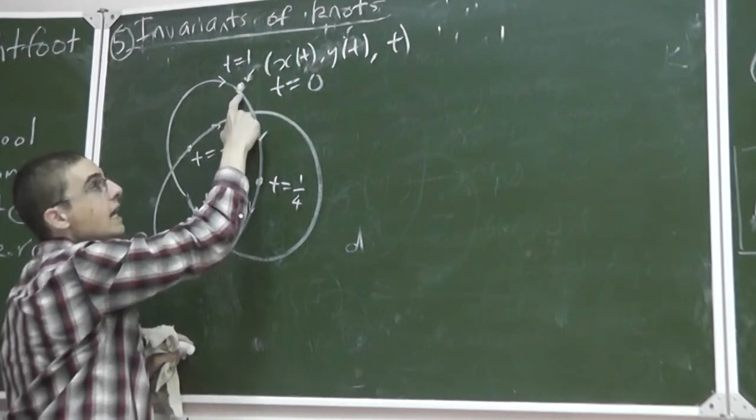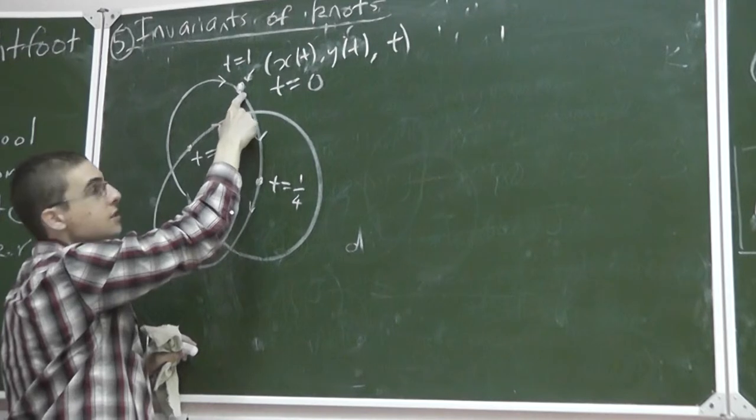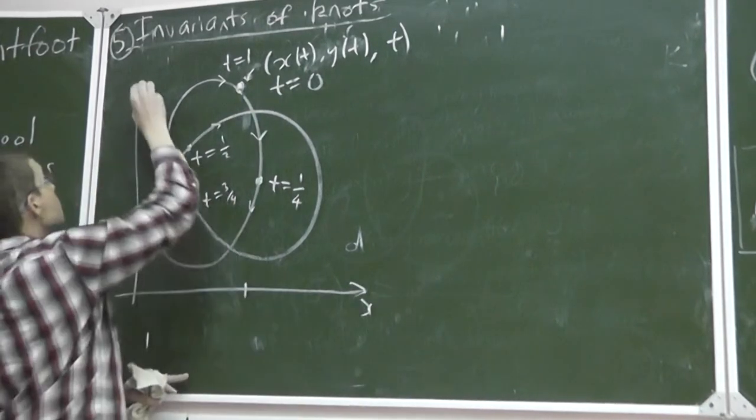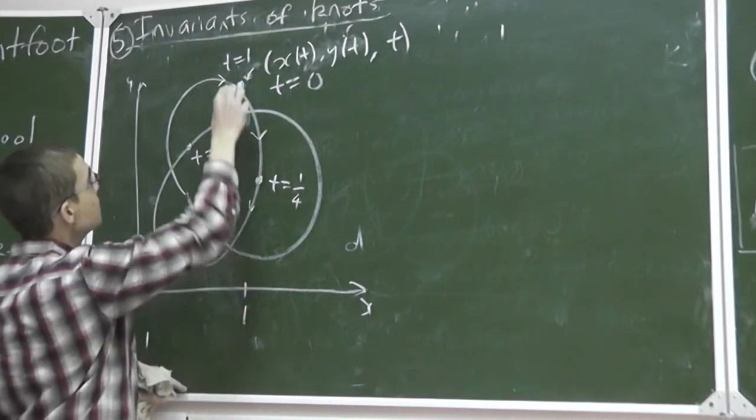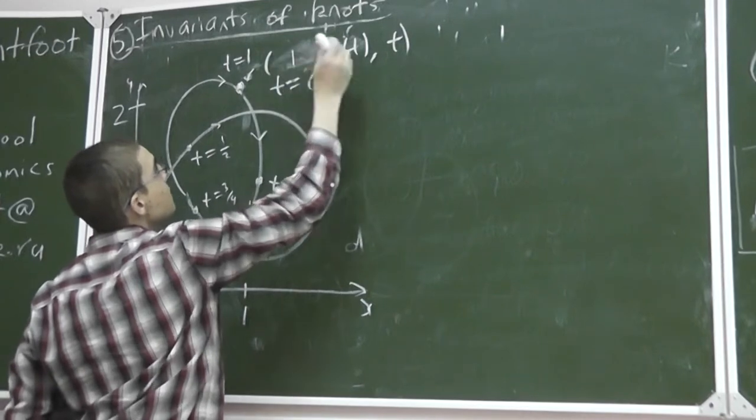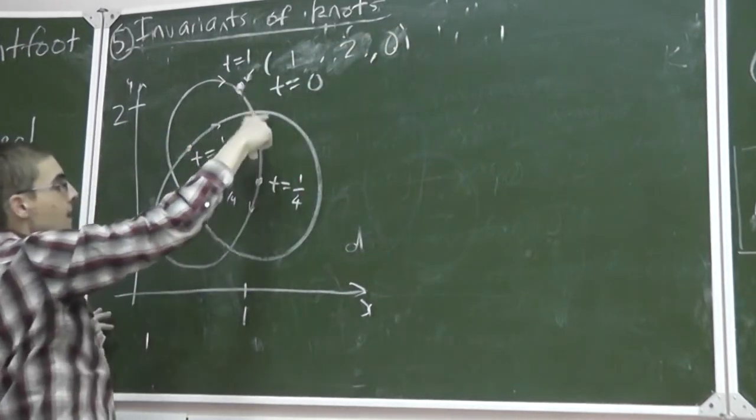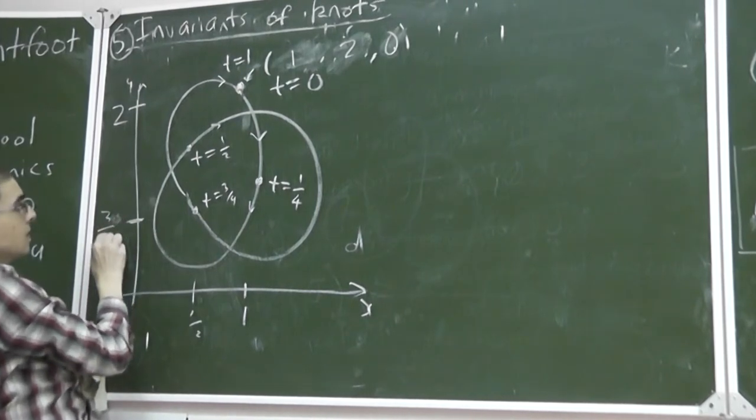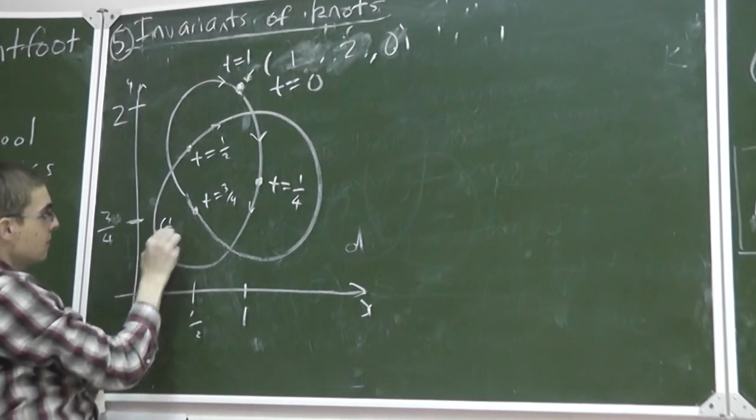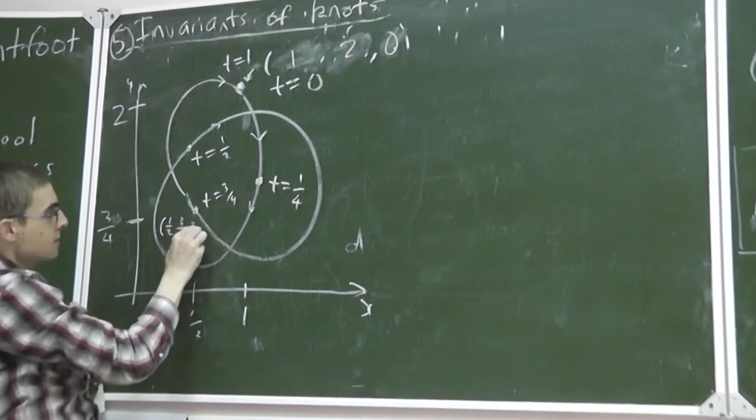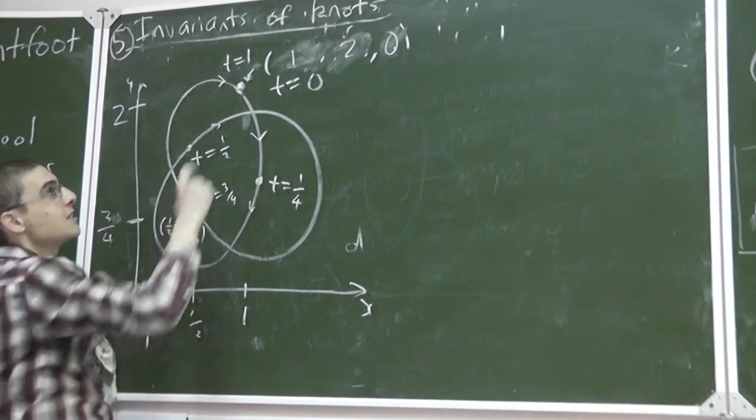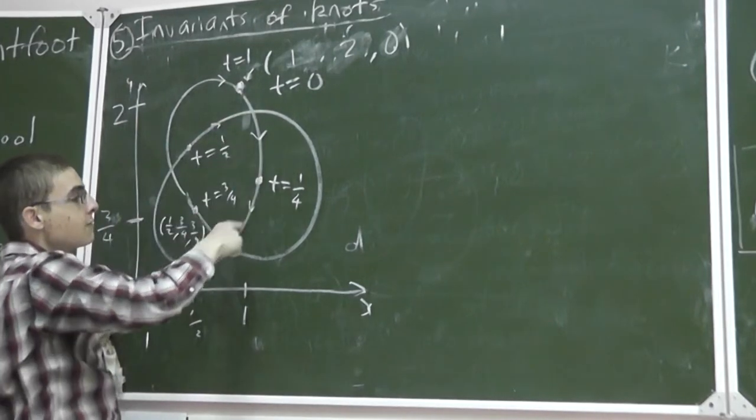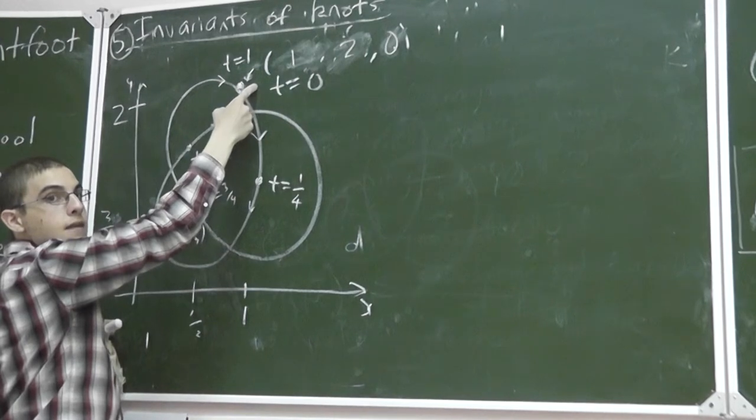So here, t equals a quarter, t equals a half, t equals three quarters, and you get back, and t equals one. Now, as you go around, your x and y-value changes. So let's, maybe I can give myself some new axes. So that's one, two. So that's like, one, two, zero. And let's say this point is a half, three quarters. Does everyone see what's happening? So as I go around, my x and y-value changes. And my t-value just goes uniformly from zero to one.